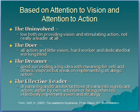The uninvolved leadership style is really not a leader style at all — very low on vision and low on action. The doer is all action and very little vision; this person works hard and is dedicated but tends to be working blindly without goals in mind. The dreamer is high on vision but low on action — good for ideas and inspiring, but not very good at implementing strategic action. The effective leader is a big dreamer and a big doer — a person who can transform dreams into significant action plans and implementation. Now go to part two.